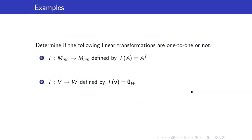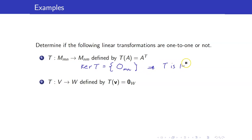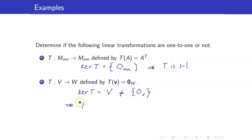Here are some examples. Let us determine if the following linear transformations are 1-to-1 or not. We already encountered this example in our discussion of kernel. The kernel of T is just the zero matrix, so therefore T is 1-to-1. Whereas for the zero transformation, which maps V to the zero vector in W, the kernel of T is the entire V, and therefore it is not just the zero vector. Hence T here is not 1-to-1.